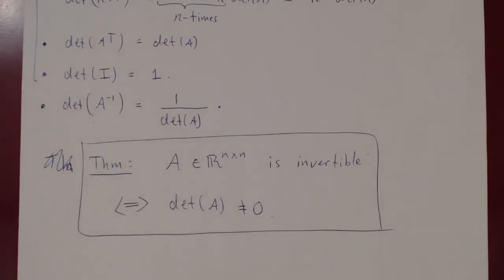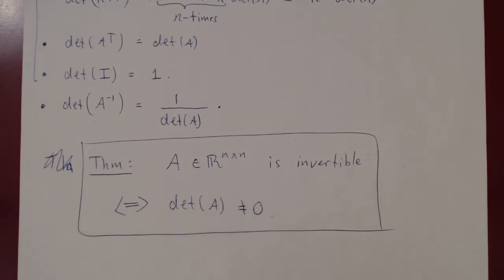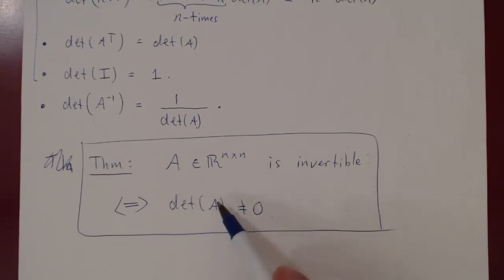In our next video, we will revisit the formula for the inverse of a 2x2 matrix, and ask what about a 3x3 or 4x4 or any square invertible matrix — do we have a formula for the inverse? The answer is yes, and it will involve cofactors and the determinant of the matrix.